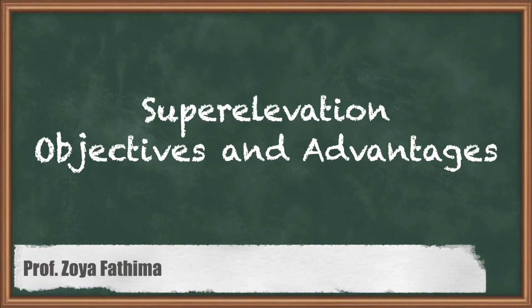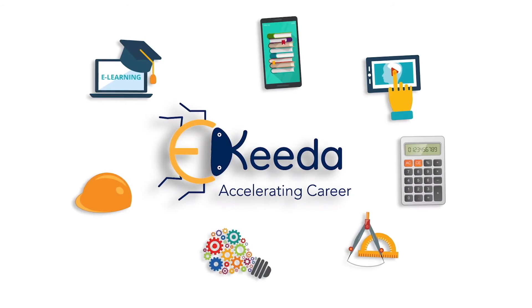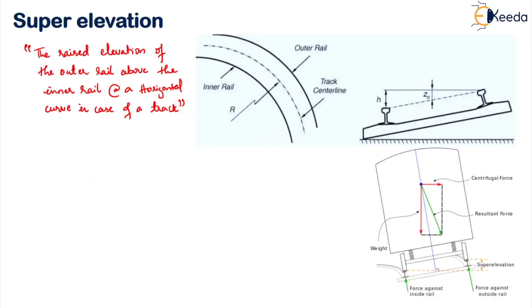Hello students, in this lesson let us study about the super elevation. We will see what is super elevation and also study the objectives and advantages of providing super elevation. So normally we know that when there is a horizontal curve, what we do is we raise the outer rail over the inner rail. This raised elevation is called as super elevation, and the notation given to it is E. Super elevation has other names like cant or banking.